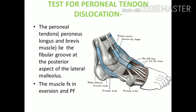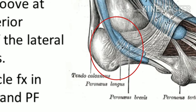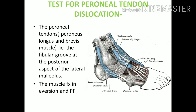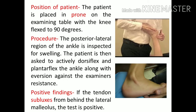Next is the Peroneal Tendon Test. The peroneal tendon is formed by peroneus longus and peroneus brevis and lies posterior to the lateral malleolus in the groove of the fibula. Its function is eversion and plantar flexion. The patient is prone with the foot in dorsiflexion. The patient is asked to evert the foot while the therapist applies a resistive force. This causes the peroneal tendon to come out of the groove, which is visible externally and accompanied by pain — a positive finding.